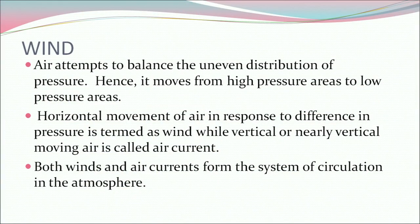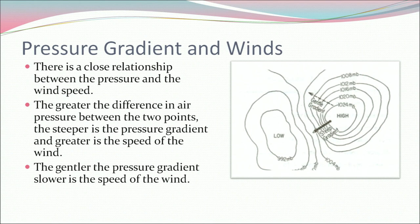Now let's discuss wind. Air attempts to balance the uneven distribution of pressure, hence it moves from high pressure areas to low pressure areas. This horizontal movement of air in response to difference in pressure is termed wind, while vertical or nearly vertical moving air is called air current. Both winds and air currents form the system of circulation in the atmosphere. There is a close relationship between pressure and wind speed: the greater the difference in air pressure between two points, the steeper the pressure gradient and the greater the speed of the wind.